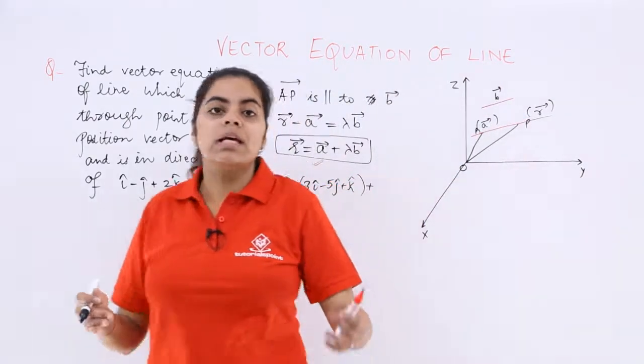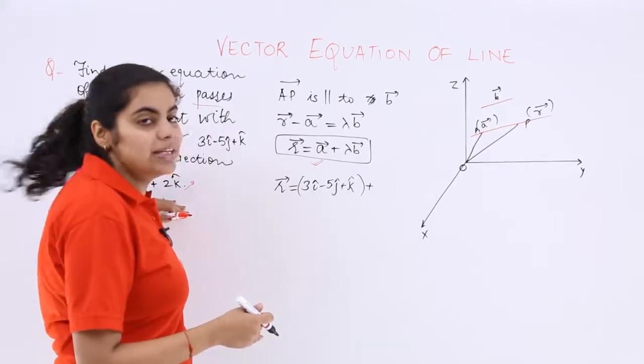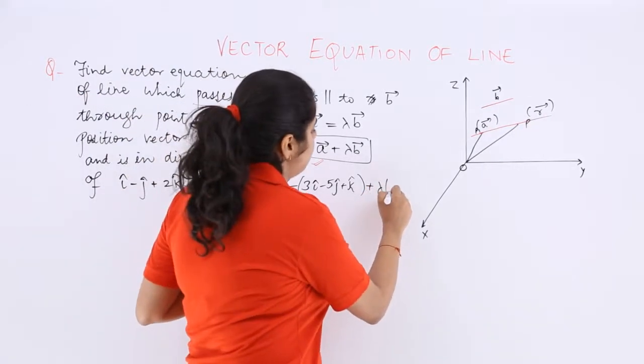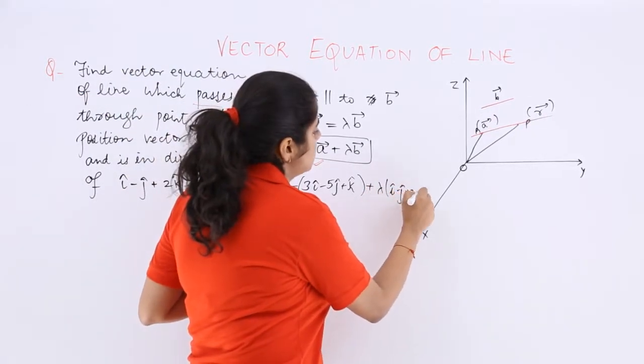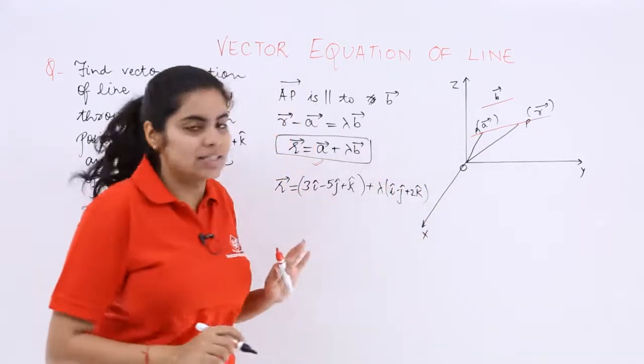Plus lambda times this, which is i minus j plus 2k. So that is the answer.